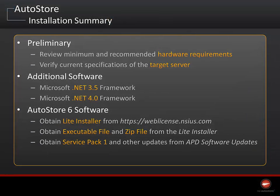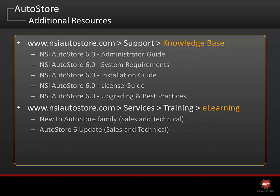To quickly recap: check that the account you're logged in as is a member of the local administrator group, and that the server hardware meets the minimum requirements and that it's not a domain controller. Have the .NET framework added to the server, download the Lite installer from our website, download the additional installation files from the Lite installer, and download software updates from the AutoStore Process Designer. Find additional documents and more information from our knowledge base, and eLearning is also available on our website.